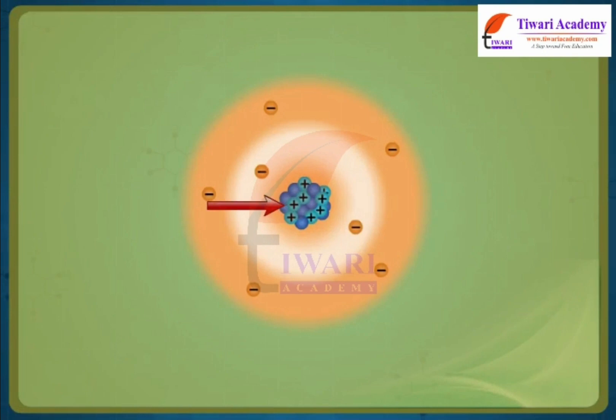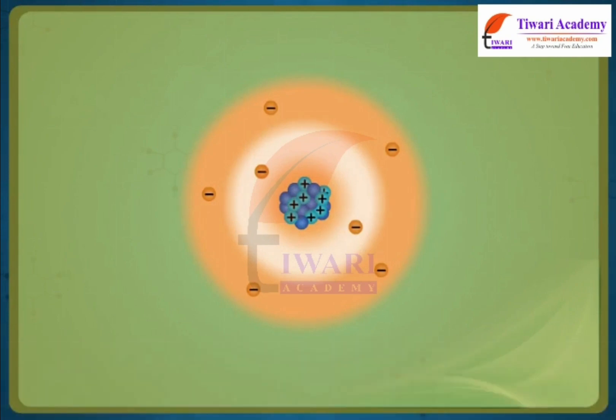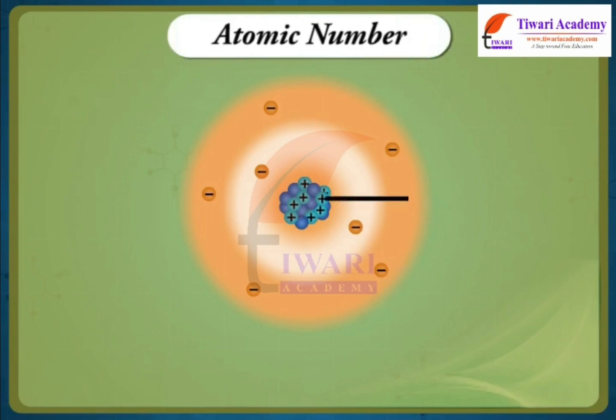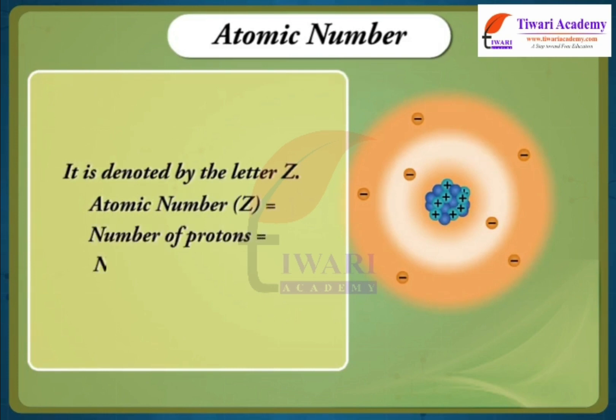The number of unit positive charges on the nucleus of an atom of an element is called atomic number of the element. Atomic number of an element is equal to the number of protons in the nucleus of its atom or the number of extra nuclear electrons. Generally, it is denoted by the letter Z. Atomic number Z is equal to number of protons is equal to number of electrons.